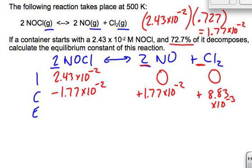We've figured out all our changes. Now let's calculate the equilibrium concentrations. For NOCl: 2.43 times 10 to the negative 2 minus 1.77 times 10 to the negative 2 equals 6.6 times 10 to the negative 3. The products are exactly their change values since they started at 0.